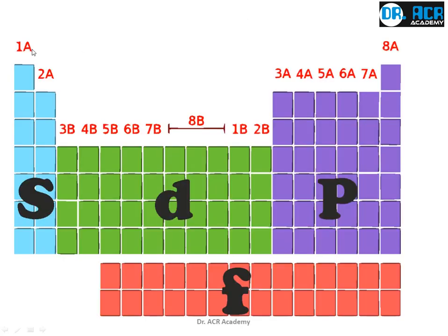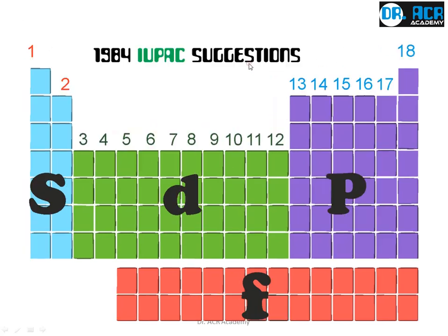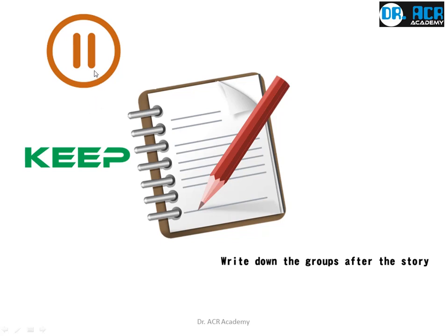Earlier, the numbering of the groups of the periodic table used to be different. After the suggestion of IU Park in 1984, the numbering changed from 1 to 18 in a single stretch. I will keep pausing the video — keep paper and a pen ready and write down the groups after each story.